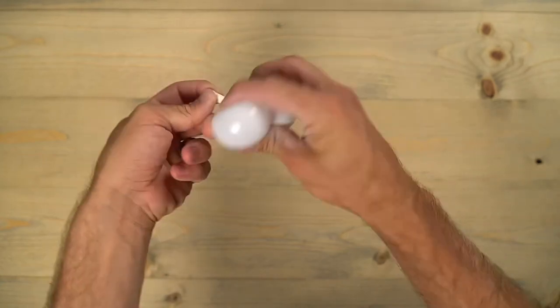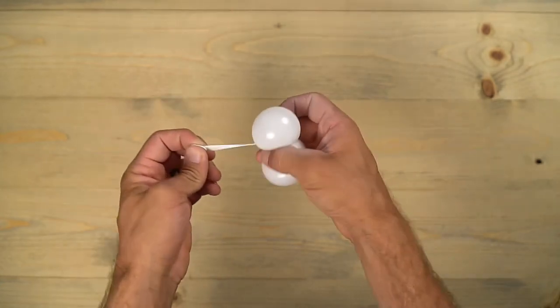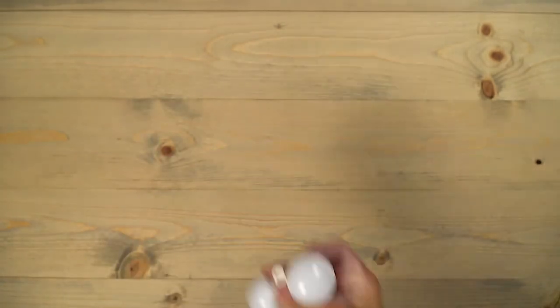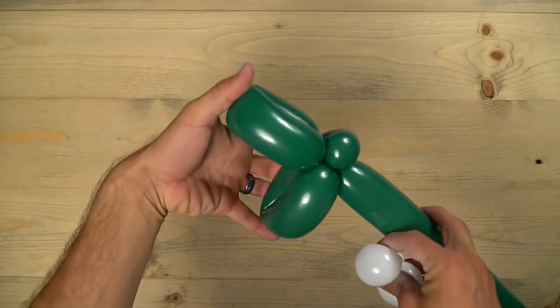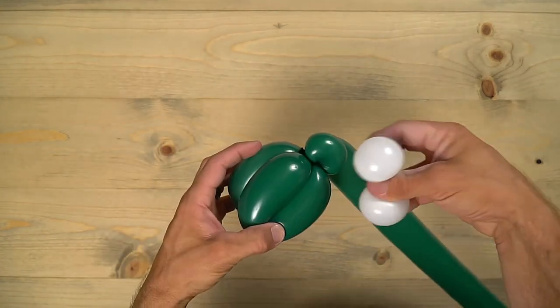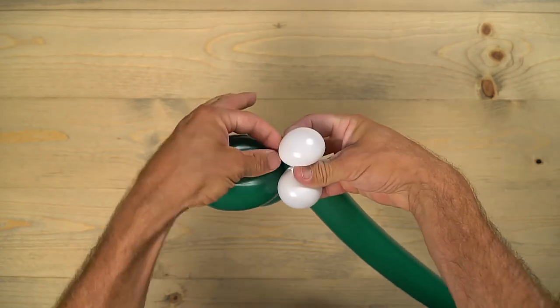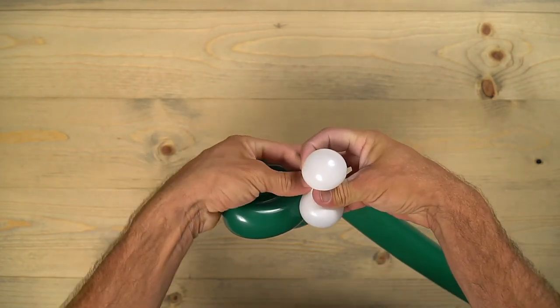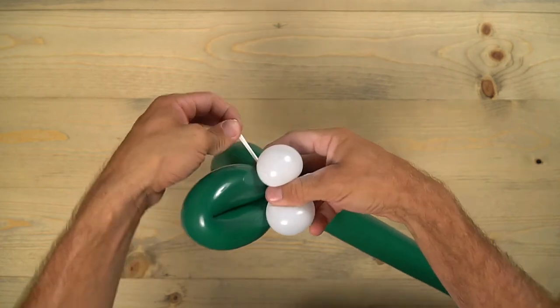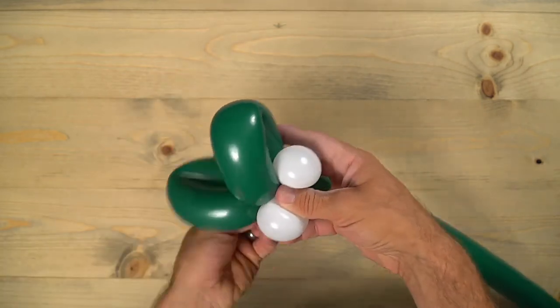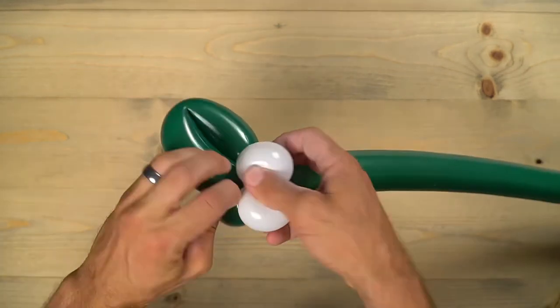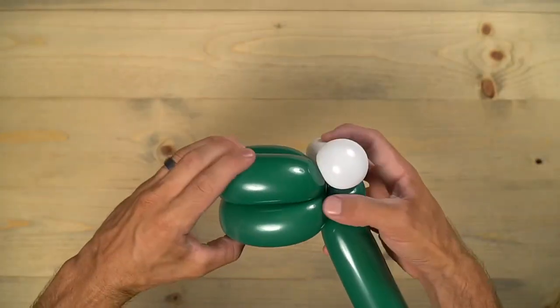Hold on to it there so it doesn't come undone, and then grab your snake body. I just pop it in right on top of that pinch twist and the top of the mouth. Holding it all in place, I'm going to wrap that around the nozzle of the white balloon. You want to wrap it all the way around and then back around the white eyeballs. Situate it where you want it.